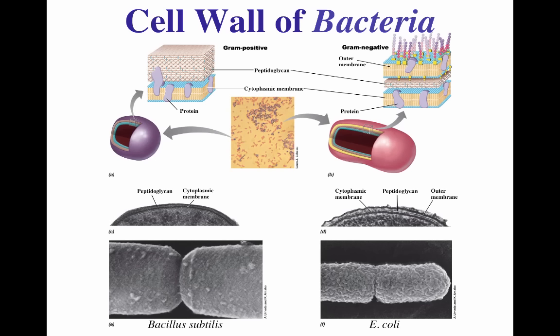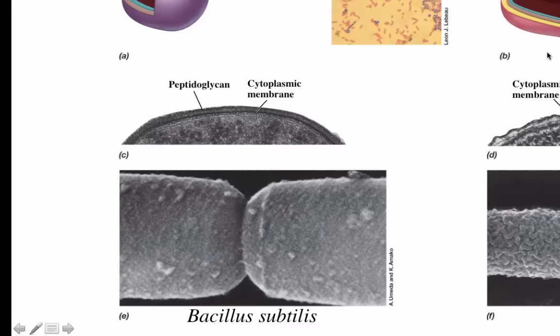This image from the book shows the difference between the cell wall of gram-positive and gram-negative bacteria. As shown in this figure, the gram-positive cell wall is mostly composed of a very thick layer of peptidoglycan. The gram-negative cell wall is composed of a thin layer of peptidoglycan, as well as an outer membrane.